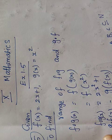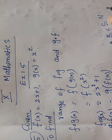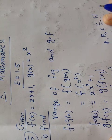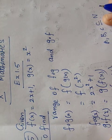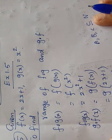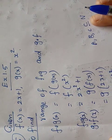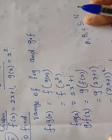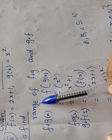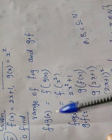Friends, this is 10th mathematics Exercise 1.5. I think you have all completed the assignment. I have completed four sums. Now I will explain the fifth sum. f of x equal to 2x plus 1, g of x equal to x squared are given. They ask to find the range of f composite g and g composite f.